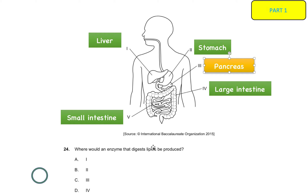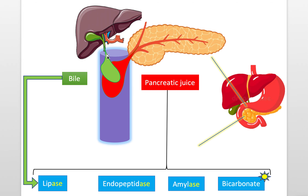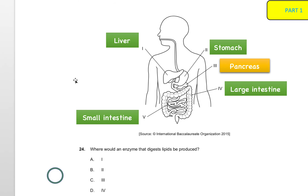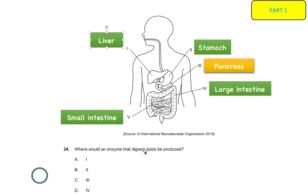You need to know what enzyme digests lipids — it's called lipase. Now, is lipase produced in the liver? No, because the liver produces something else called bile. Bile is interesting because it also breaks down fats, but it is not an enzyme. The question asks where an enzyme that digests lipids is produced. Technically bile is produced in the liver and bile does help break down lipids, but it is not an enzyme, so option A cannot be correct.